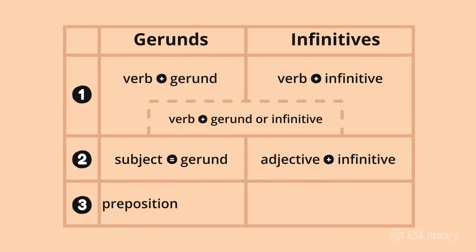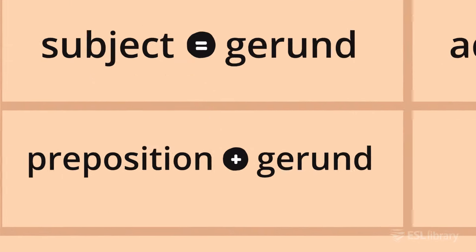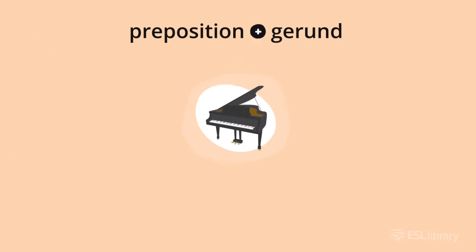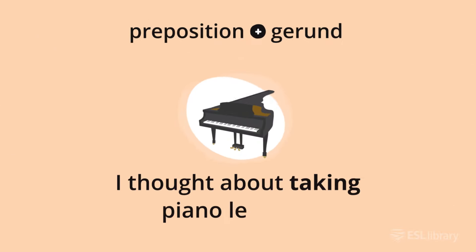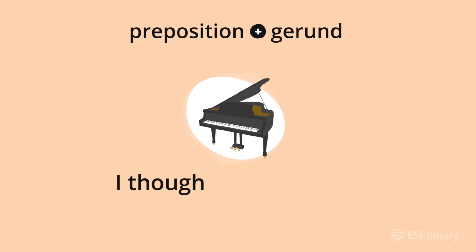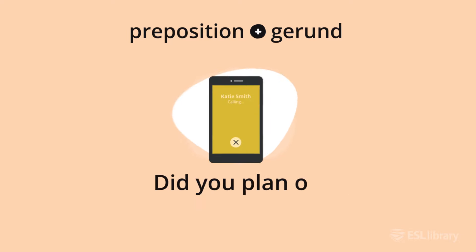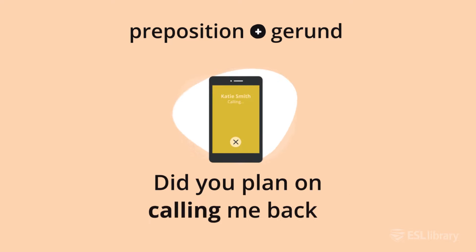After a preposition, we usually use a gerund. For example, 'I thought about taking piano lessons,' and 'did you plan on calling me back?'